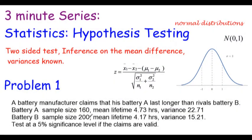You can have a quick look here - sample sizes are 160 and 200, the mean lifetimes you can see here, and the variances are here. The manufacturer is claiming that his battery A lasts longer than rival's battery B, and we have to test this at a 5% significance level.